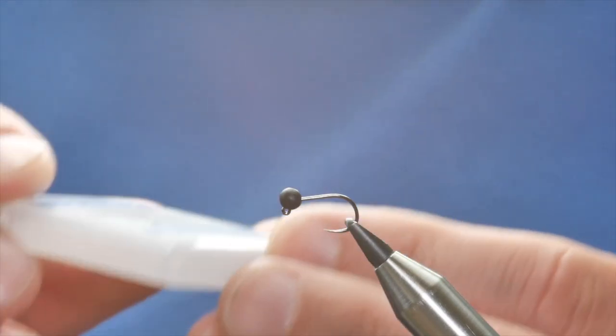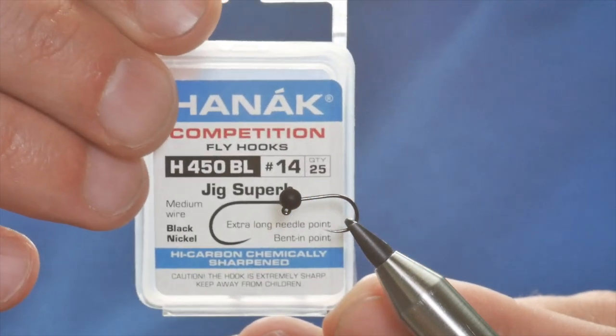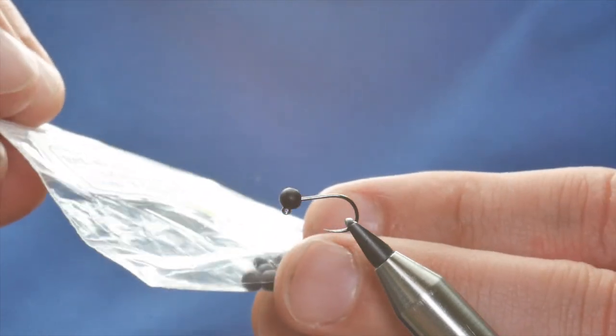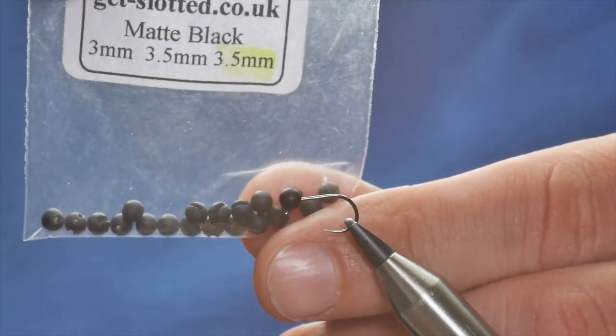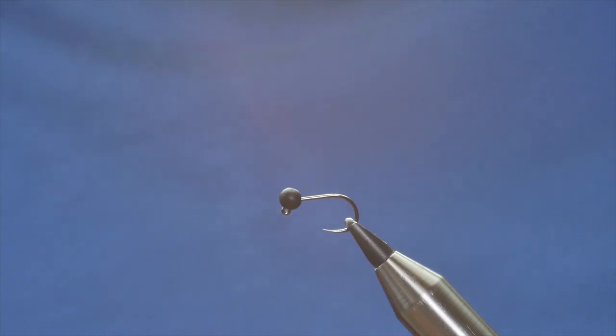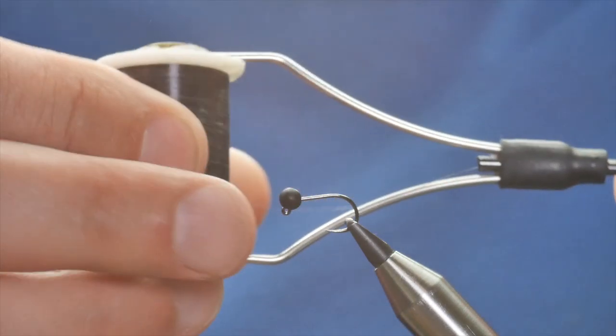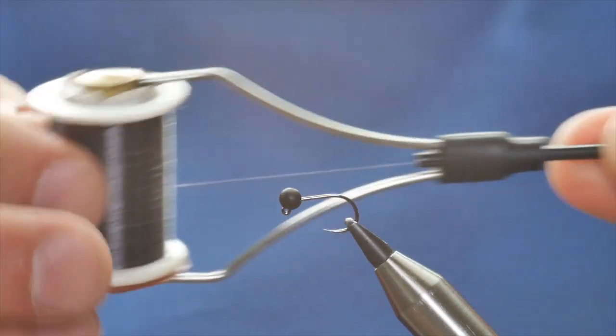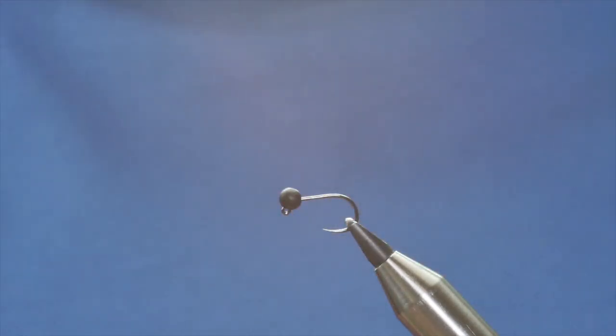In the vise I have a Hanak Jig Superb at size 14 and I've coupled that with one of the slotted 3.5 millimeter beads. As you can see here it's a black one, and I'm going to be using the Fish On Ultimate Tine Silk. You can't see the label there, but it's the darker color.